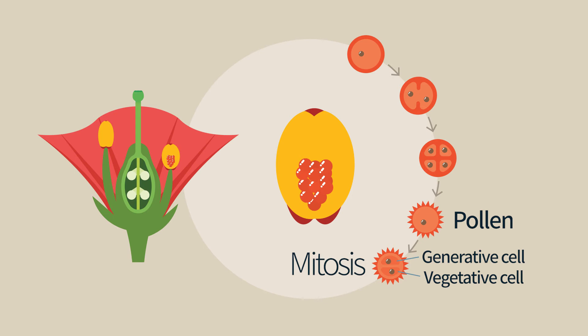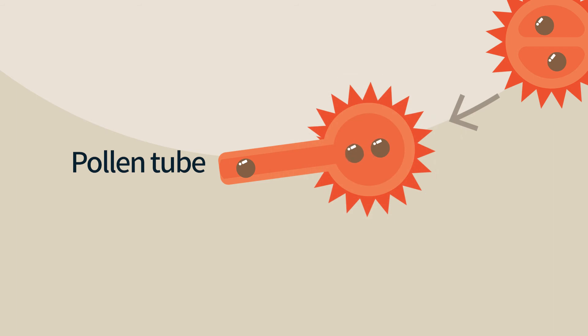Once the pollen grain has landed on the stigma, the vegetative cell will grow the pollen tube. This tube grows through the style and reaches the ovule. The generative cell undergoes a second mitotic division, so that when the pollen tube reaches the ovule, it contains three cells.